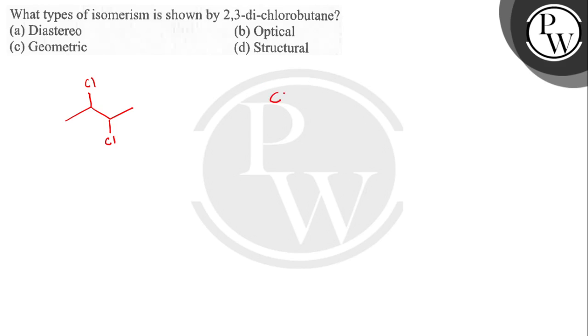Now, what is a chiral center? If we have an atom like carbon and this atom is sp3 hybridized and it contains 4 different units like A, B, C, and D.